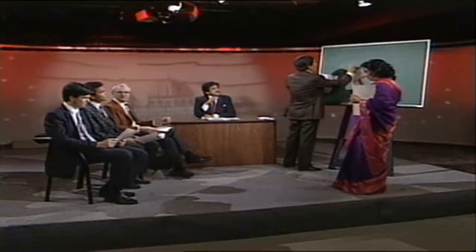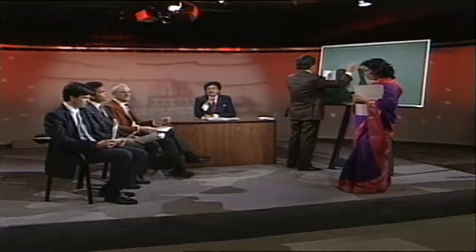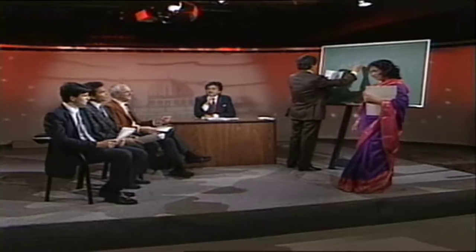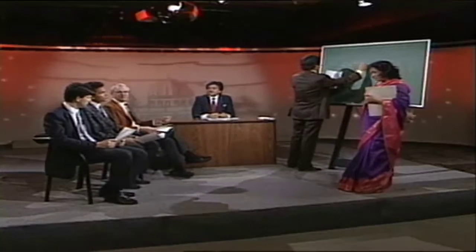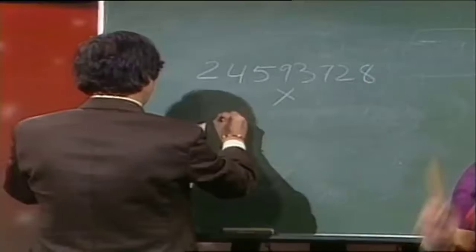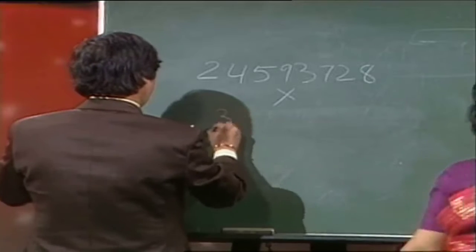Could you just tell me how many digits it is, so that I can sort of program my mind? How many digits by how many digits? They're both 8 digits. 8-digit numbers? Yes. Okay, fine. I'll look at it once it is written down.